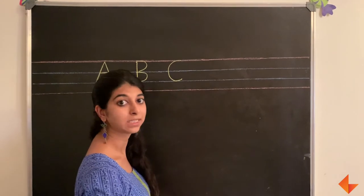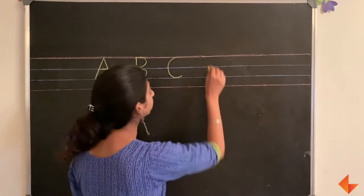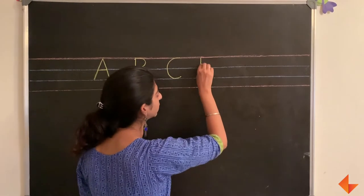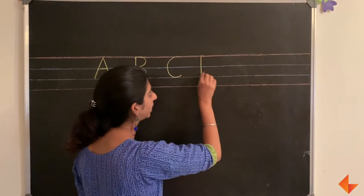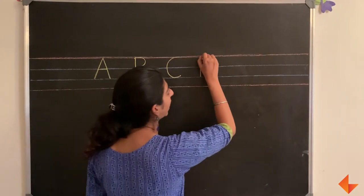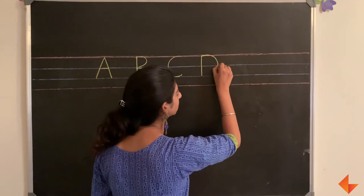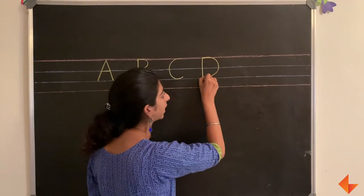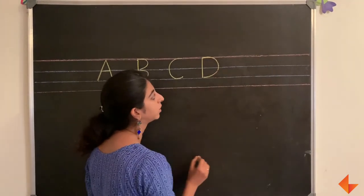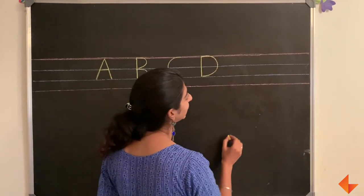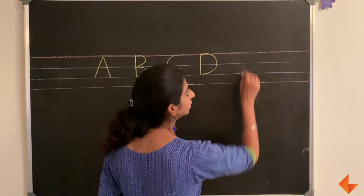To write the letter D, draw a standing line and a curved line.